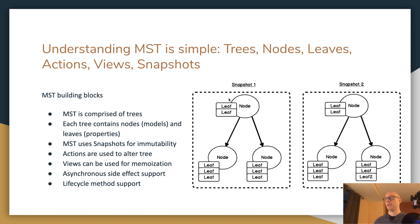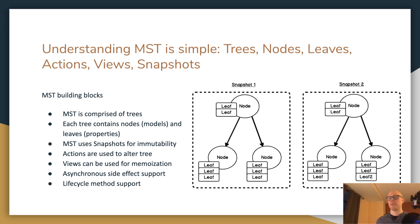Actions and views: anytime you want to update your tree, you'll do it through an action. You'll have functions and asynchronous functions within actions that allow you to update different components such as your leaves or nodes. Views are computed values within your tree — for example, if you've got several employee nodes and want to find out how many employees are in your tree, you can create a computed view called 'number of employees' that simply returns that value. MobX State Tree has memoization built in for most views, and as long as the view doesn't have a parameter, it'll be automatically memoized, which saves on performance optimization.